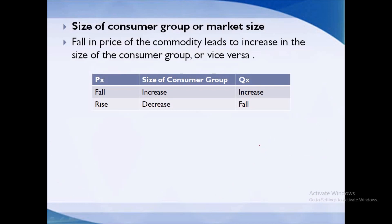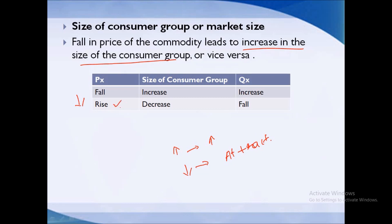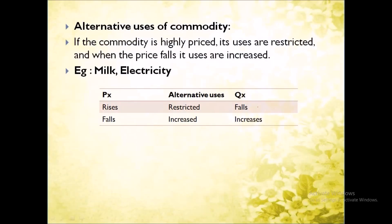Now let us look at the size of the consumer group. Simply put, as the number of consumers increases, demand increases. But also, if the price of a commodity falls, it attracts more consumers to purchase it. Some consumers who could not afford it earlier can now afford it. So if price falls, the consumer group increases and demand increases. Similarly, if price rises, the consumer group decreases and quantity also decreases.